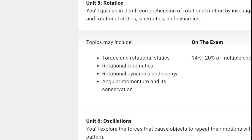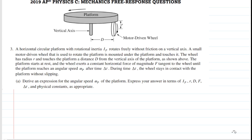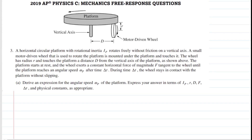One of the units on the AP Physics C exam is rotation. Rotation includes a number of different topics, as you can see by the bullet points, and it accounts for 14 to 20 percent of your multiple-choice score. So it's a pretty significant part of the test, and in this video and others that follow, we're going to explore rotation by completing some free-response problems. Here is a problem from the 2019 AP Physics C exam.